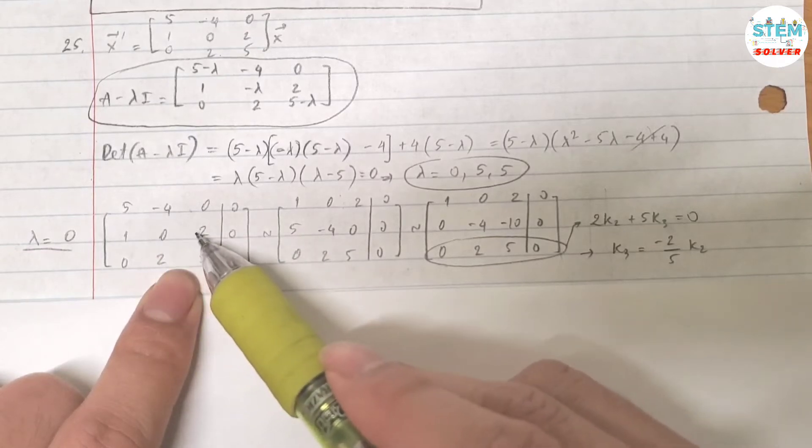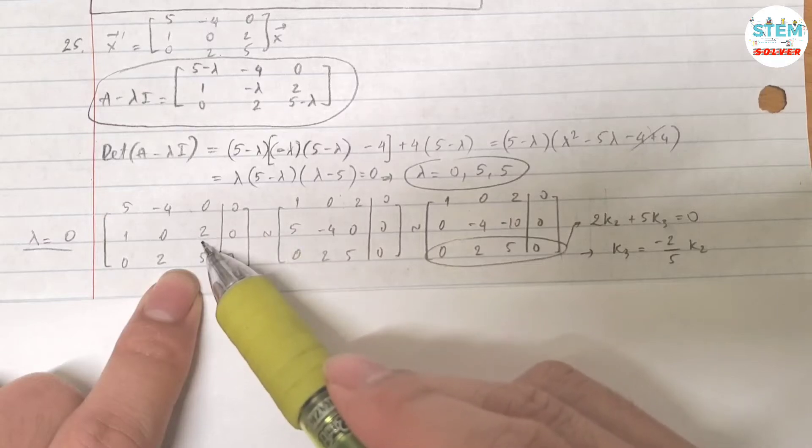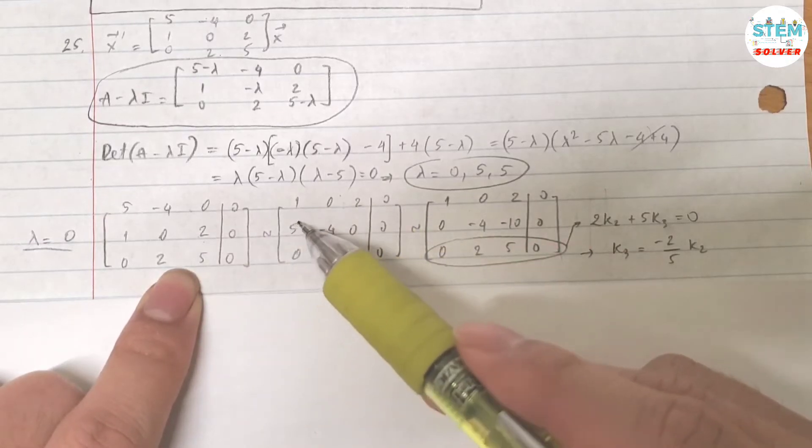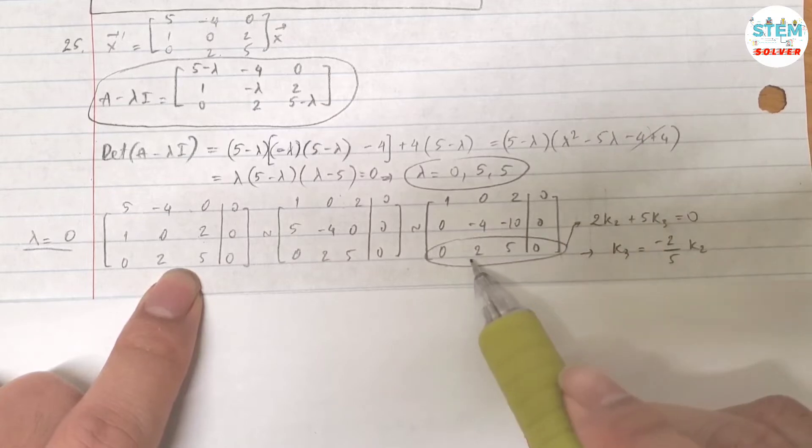No, I move the second row up, the first row down. And then make this become 0.